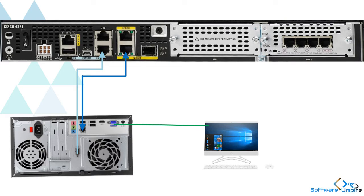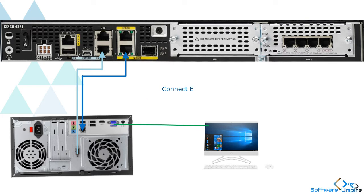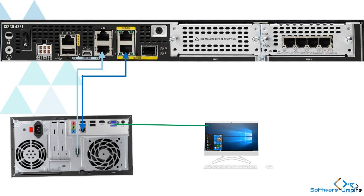As you can see in the image, a console cable from the serial port of a Windows PC is connected to the console port of the router. If you do not have a serial port in your system, you can use a USB to serial converter and connect to the console port of the router. We have also used an ethernet cable from the PC LAN interface to the router interface. This ethernet link is used to transfer the file from the router to the TFTP server.